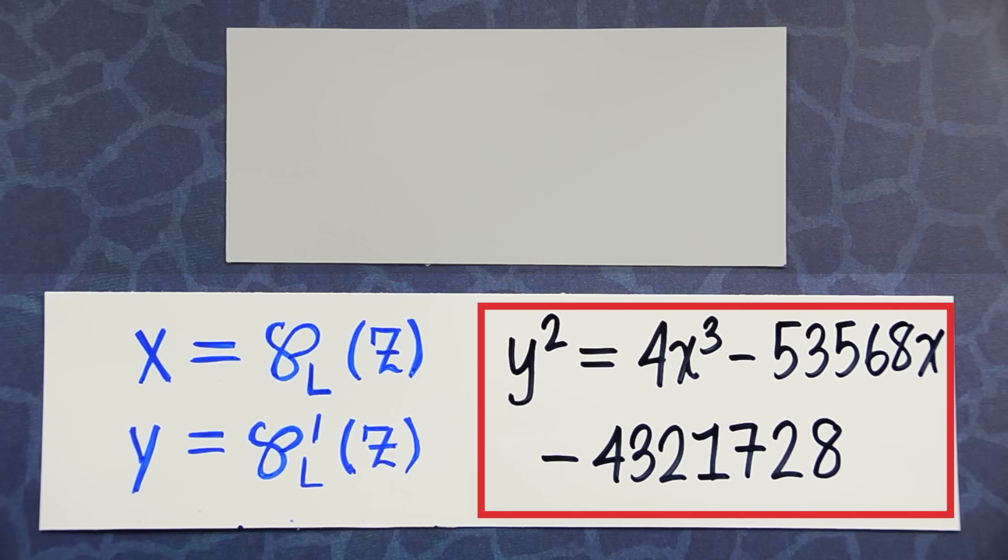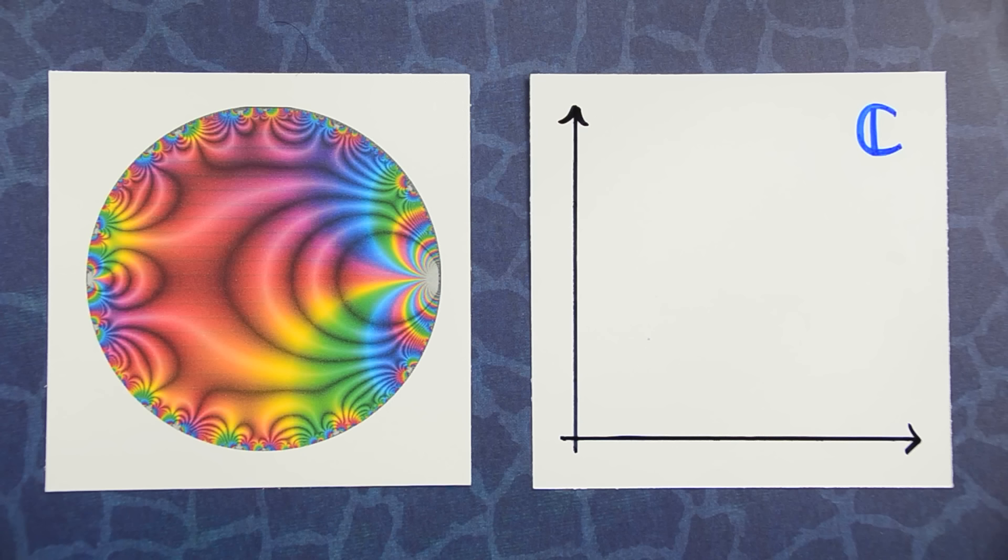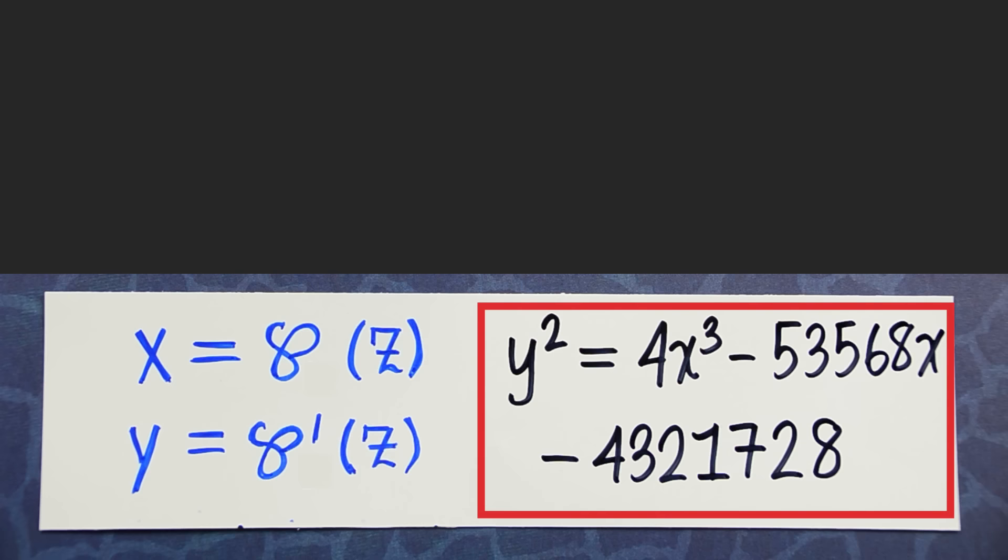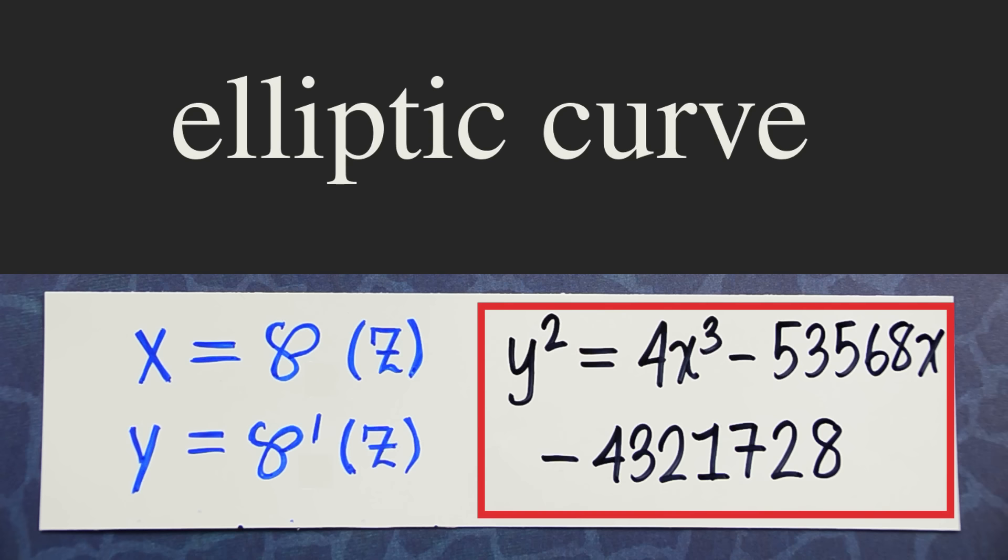Now this equation over here is given a fancy name. It's called an elliptic curve. Let's summarize what we've done so far. We started off with a modular form. From it, we cooked up a lattice, and from that lattice, we produced this equation over here, an elliptic curve.